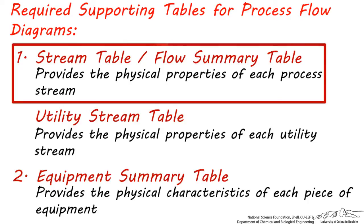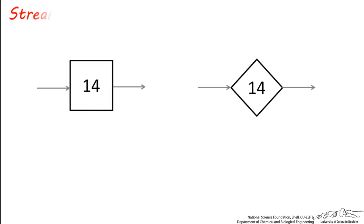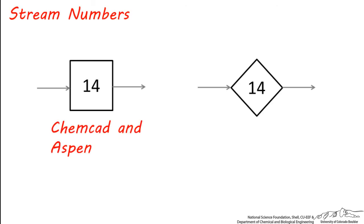I'll be discussing stream tables. These are stream numbers, and since they're not pieces of equipment, they do not have a letter abbreviation. In ChemCAD and in Aspen, stream numbers are automatically labeled for you and put in squares, and some other diagrams may have them in diamonds.